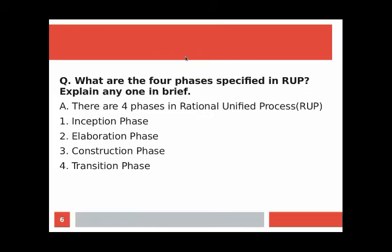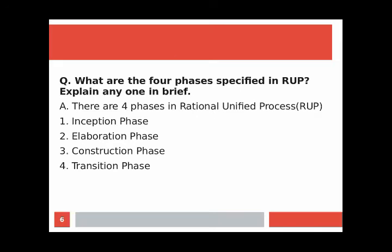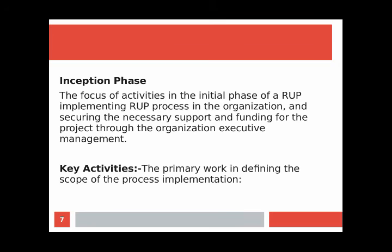Next question: what are the 4 phases specified in RUP? Explain any one in detail. The four phases in Rational Unified Process are: inception phase, elaboration phase, construction phase, and transition phase. We will see the inception phase in detail. The focus of activities in the initial phase of a RUP implementation project is on clearly defining the vision and scope for implementing RUP process in the organization.